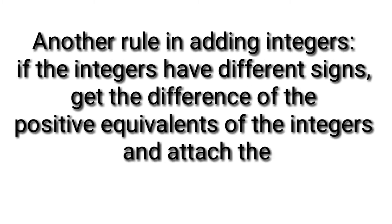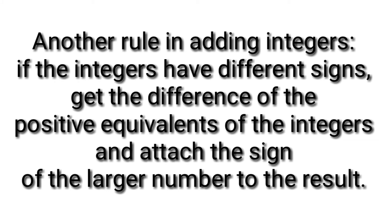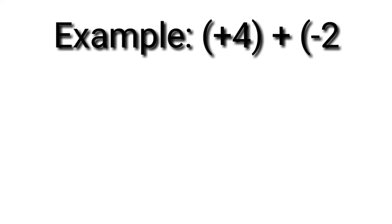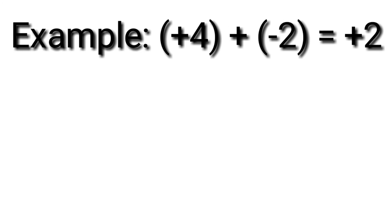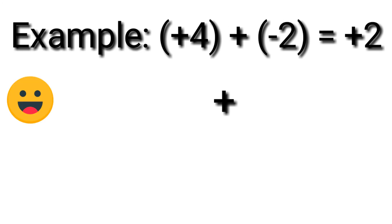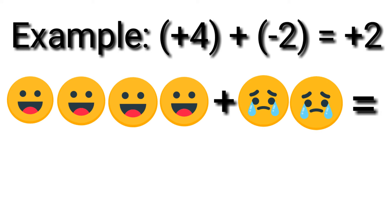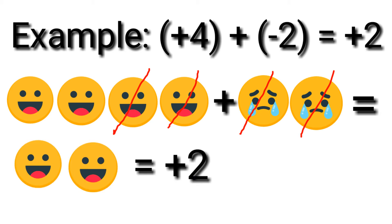Another rule in adding integers: if the integers have different signs, get the difference of the positive equivalence of the integers and attach the sign of the larger number to the result. Example: positive 4 plus negative 2 equals positive 2. Four happy faces added to 2 sad faces — eliminate 2 happy faces and 2 sad faces. Two happy faces left — positive 2.